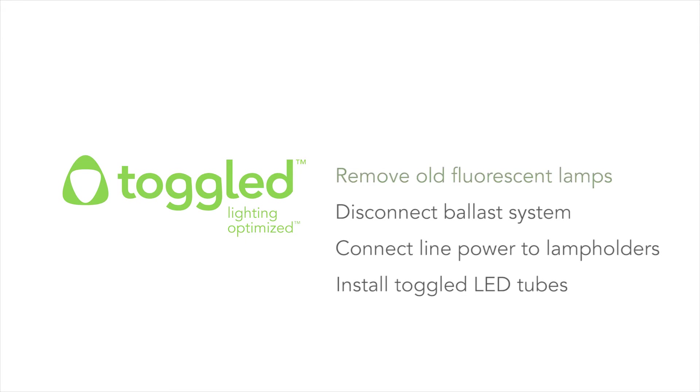Installation is easy. Remove your old fluorescent lamps, disconnect the ballast system, connect line power to lamp holders at one end of the fixture, and install your toggled LED tubes.